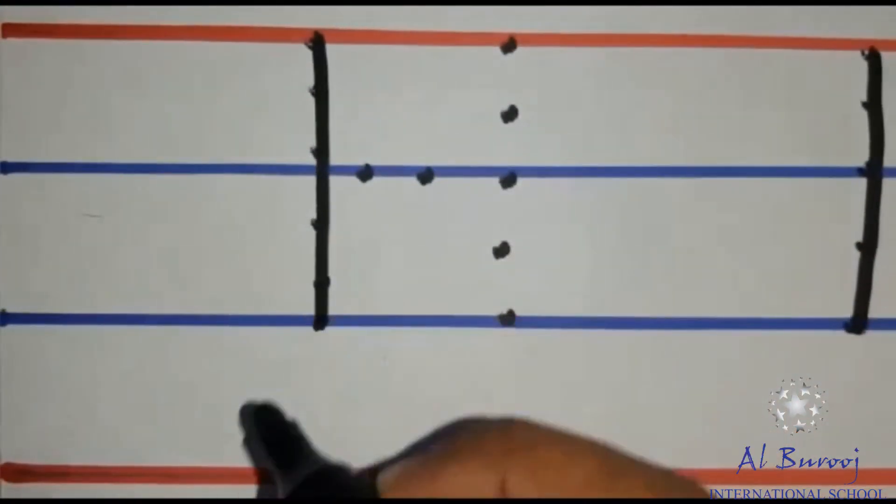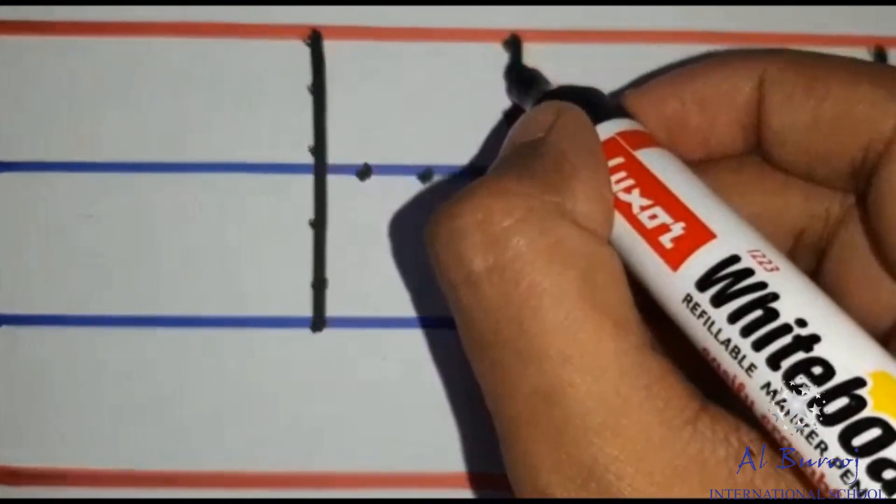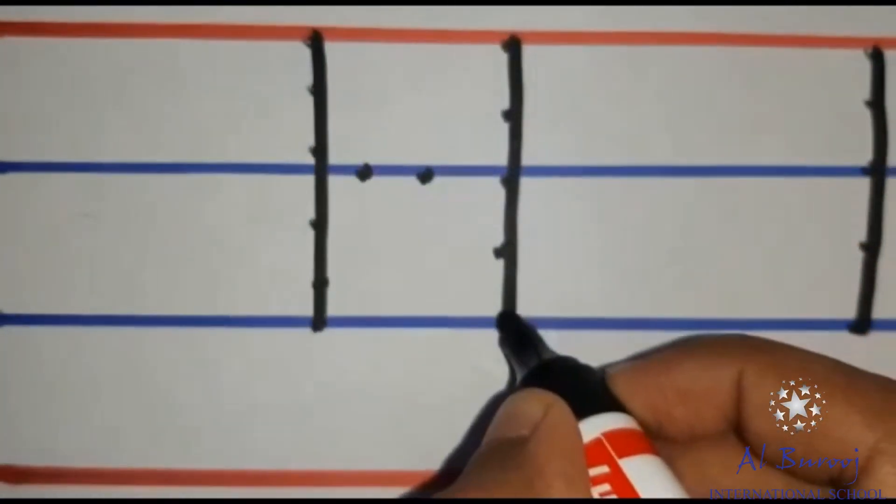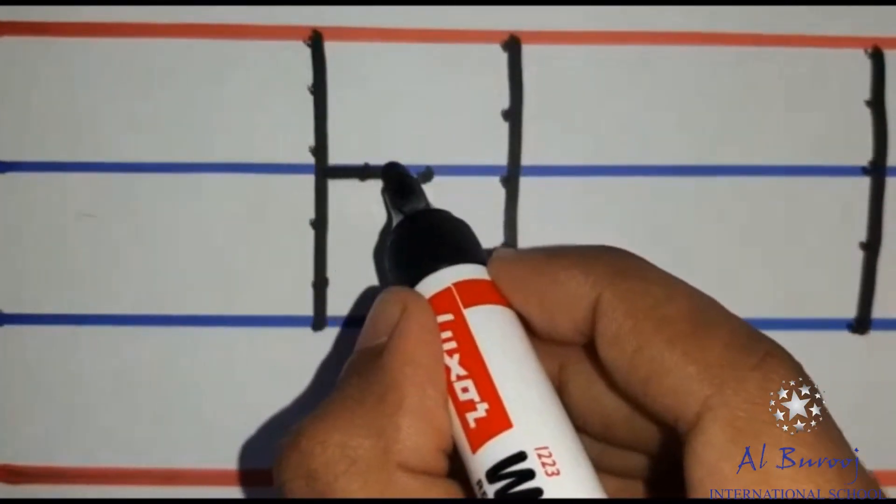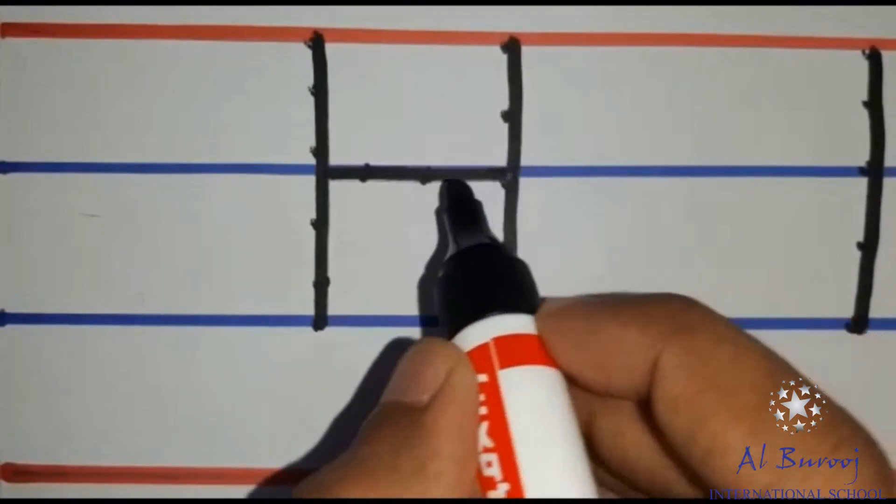Then, trace both the standing lines and connect the two standing lines with the sleeping line. This is how we trace the letter H.